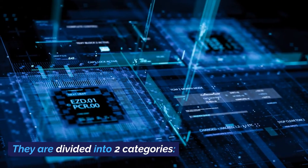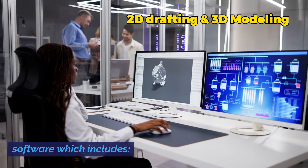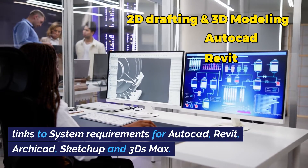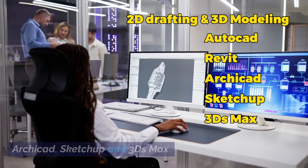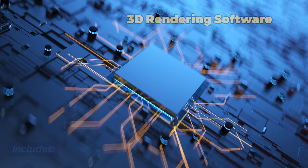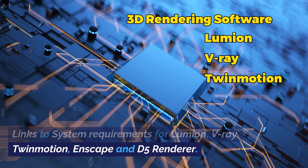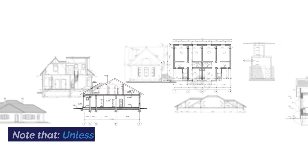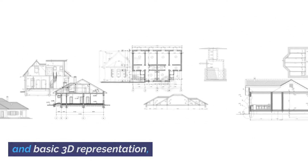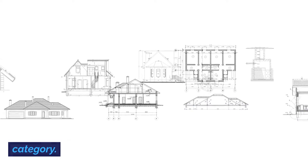They are divided into two categories. Category 1: 2D drafting and 3D modeling software, which includes links to system requirements for AutoCAD, Revit, Archicad, SketchUp, and 3Ds Max. Category 2: 3D rendering software, which includes links to system requirements for Lumion, V-Ray, Twinmotion, Enscape, and D5 Renderer. Note that unless you deal with basic 2D linework and basic 3D representation, I would recommend you check out the system requirements in the 3D rendering software category.